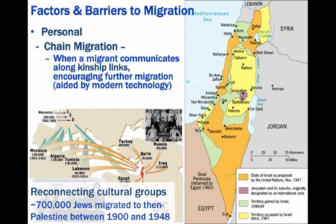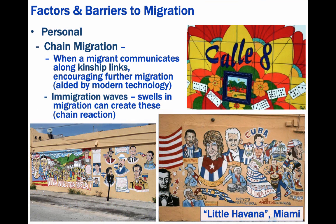Chain migration occurs when a migrant communicates with family or friends — what we call kinship links — and creates a more positive perception of a location, and may even promise to help them with living accommodations or with obtaining a job. Around 700,000 Jews migrated to what was then Palestine between 1900 and 1948, and since then thousands and thousands more have also migrated there.